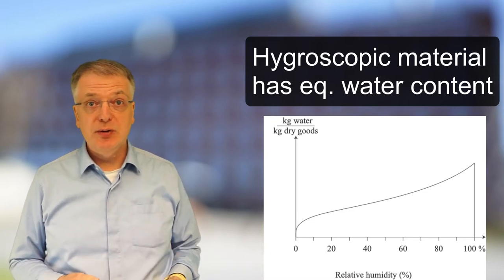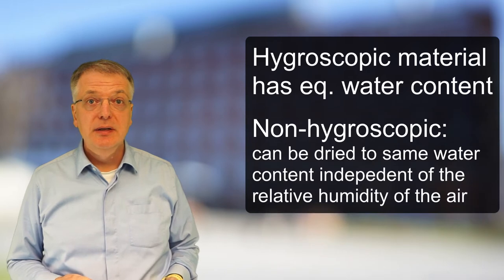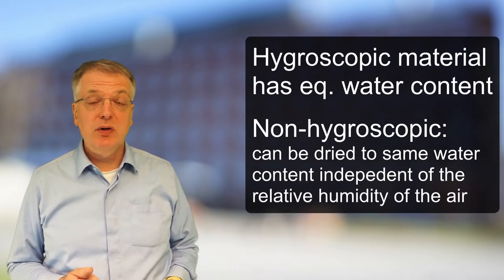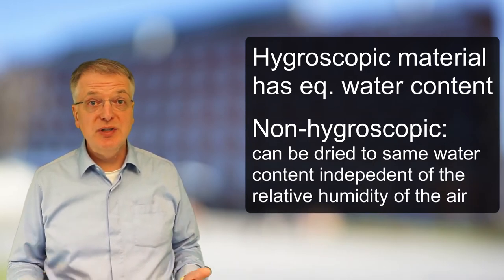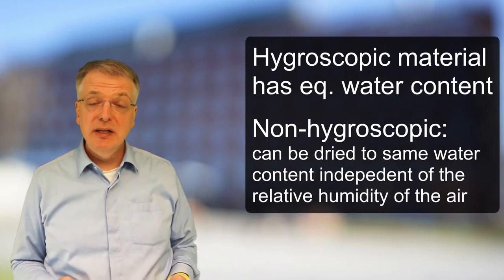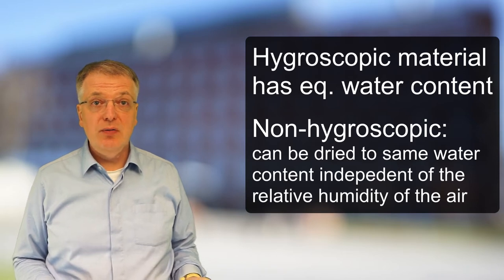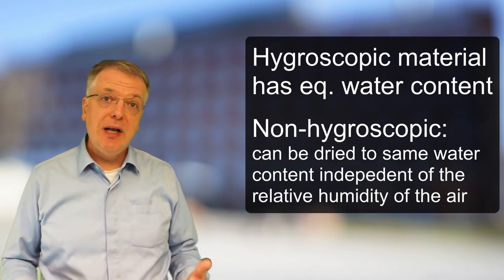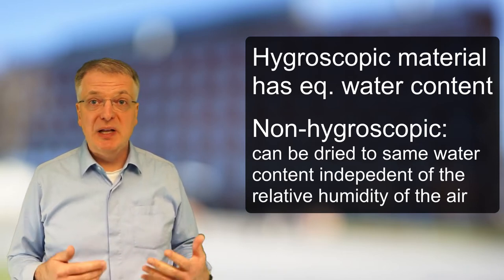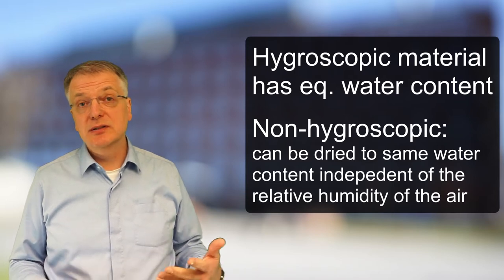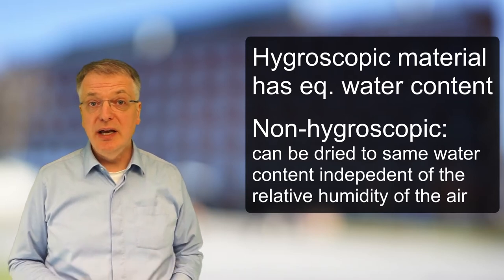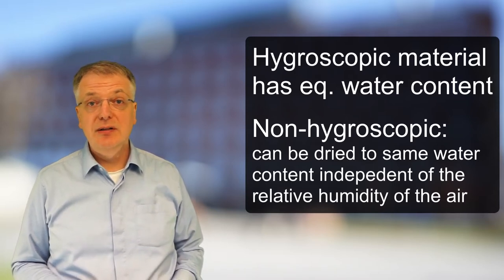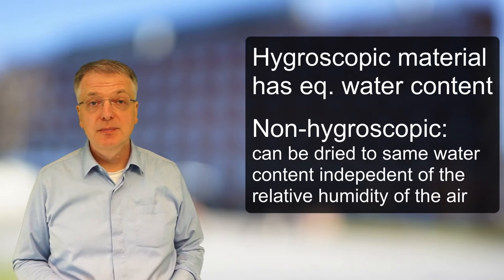A non-hygroscopic material is a material which can be dried to the same water content, and possibly zero, independent of the relative humidity of the air. The relative humidity must be less than 100 percent, of course, since you cannot dry anything with air that has a relative humidity of 100 percent.